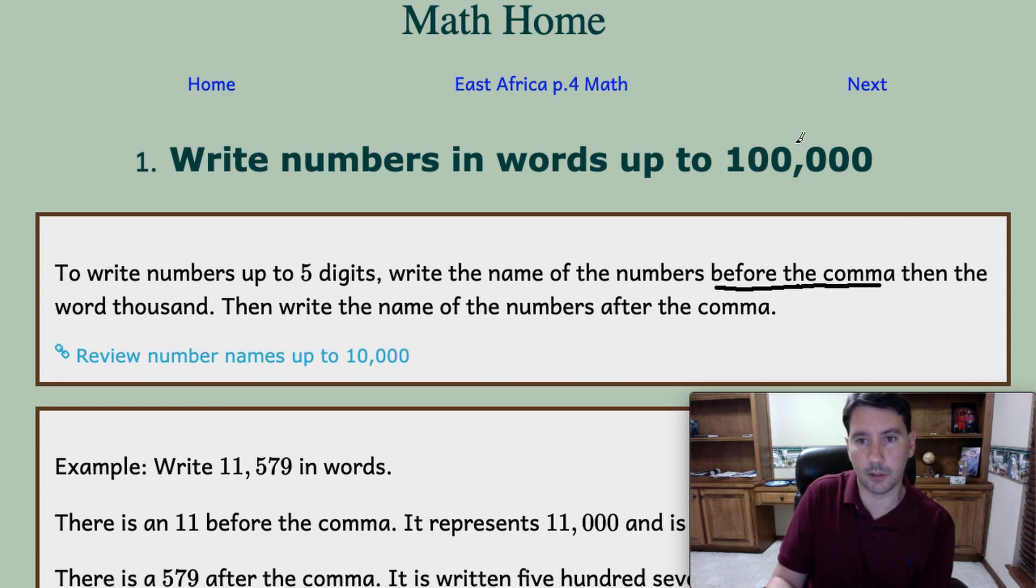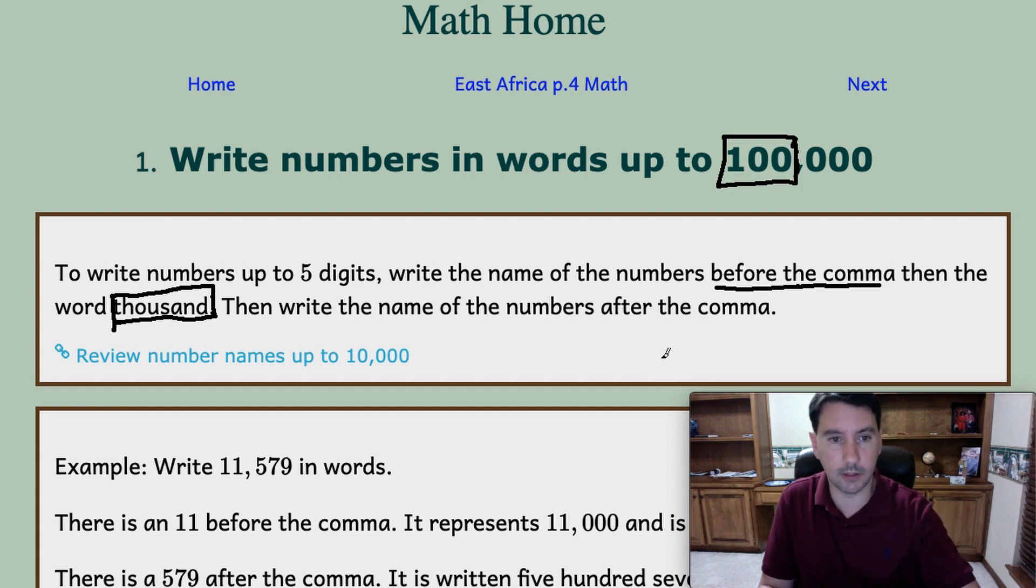Here's the comma. We take this and write the word 11, then you write the word thousand. Then you write the name of the numbers after the comma and you write them just as you'd say them.